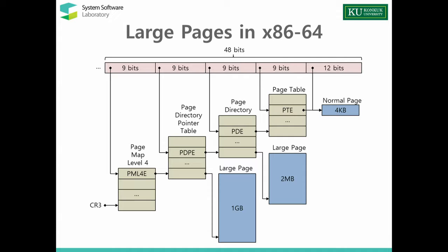Intuitively, the easiest way of reducing these overheads is to use a large page size, because large page size can reduce the number of pages. Current modern processors provide support for large page sizes — for example, Intel 64-bit processors provide 2 MB and 1 GB large pages. If we assume a 2 MB user buffer backed by a normal 4 KB page, we need 512 iterations for memory mapping and data copy. But if we use a 2 MB user buffer backed by a large page, we can finish the memory mapping and data copy in a single iteration, significantly reducing per-page overhead.